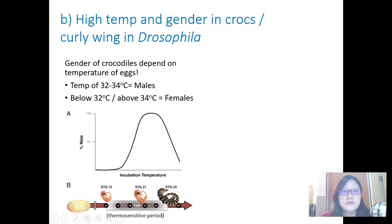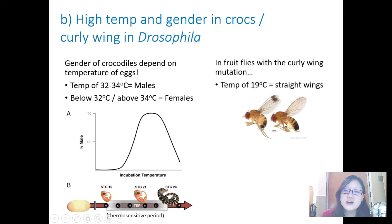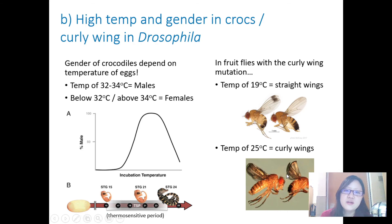Curly wing appearance in Drosophila is also affected by temperature. In fruit flies with a curly wing mutation, a temperature of 19°C will cause them to have straight wings — they have the mutated allele but still show straight wings at low temperature. At a slightly higher temperature of 25°C, this results in curly wings. So the curly wing allele is only expressed at the higher temperature of 25°C.